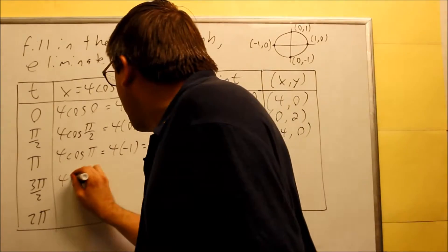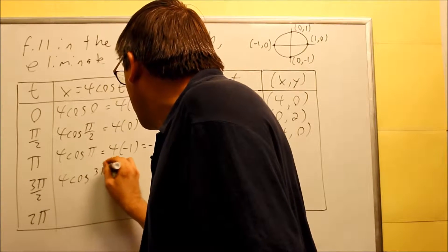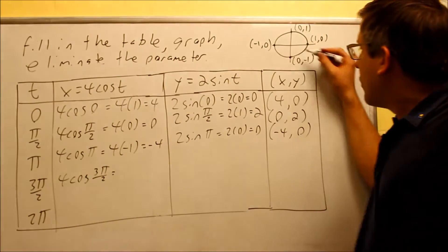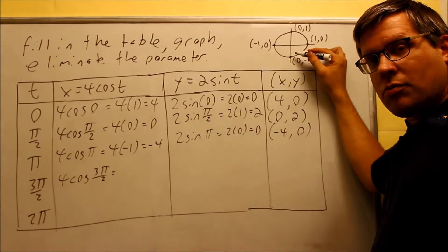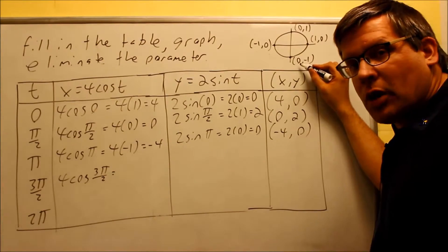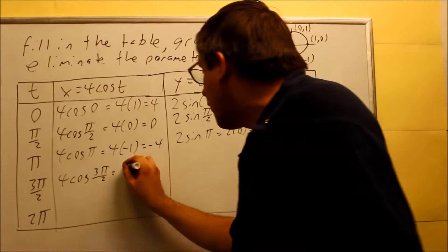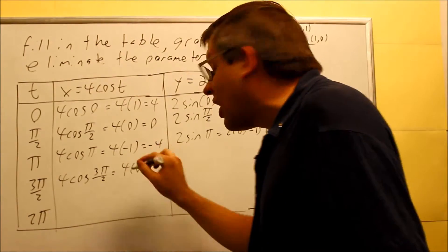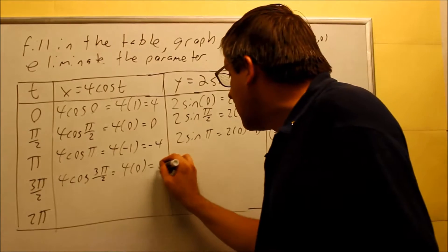Moving on down, we have 4 cosine 3π/2. Okay, 3π/2 is this spot on the unit circle. We're asking for the cosine value. The cosine value of 3π/2 is 0. So I have 4 times 0 is the value that comes off of my unit circle. I get a 0.